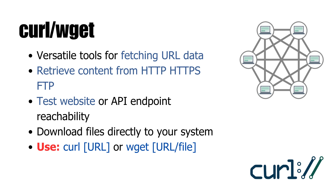Both curl and wget are tools for pulling data straight from URLs. For example, curl http://example.com fetches the contents of a webpage right in your terminal, while wget http://example.com/file.zip downloads a file directly to your system. These are especially useful for quickly checking if a website or API endpoint is reachable without needing a browser. Developers use curl constantly to test APIs, while wget shines at automating downloads.